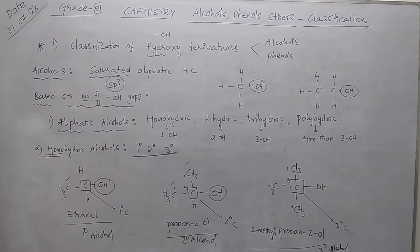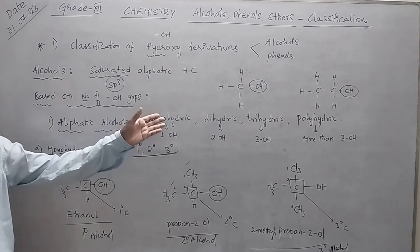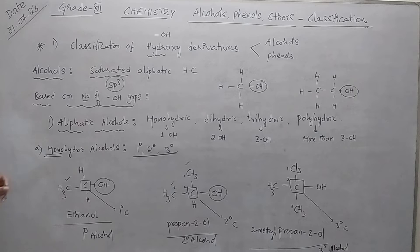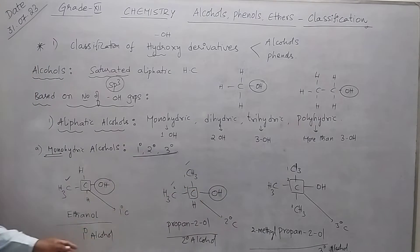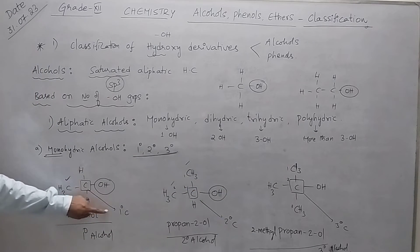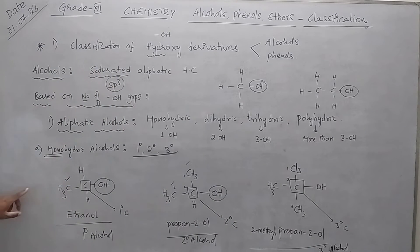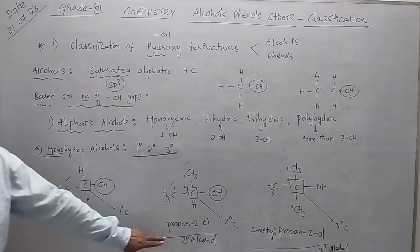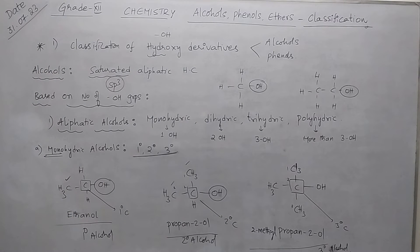To summarize: aliphatic alcohols contain the OH group on a saturated aliphatic hydrocarbon chain. Monohydric alcohols have one OH group, and depending on whether the carbon bearing the OH is primary, secondary, or tertiary, we classify them as primary, secondary, or tertiary alcohol.